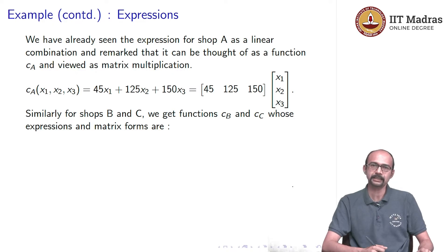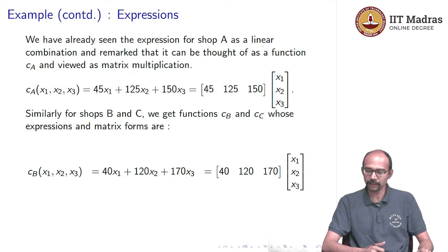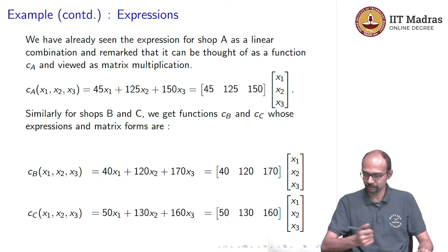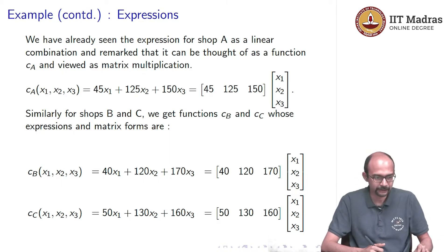Similarly for shops B and C, we can write the cost functions CB and CC. The shop is capital C and the cost is little c. And the expressions and matrix forms are as below. CB is the linear combination 40x1 + 120x2 + 170x3 and that is the corresponding matrix multiplication. And for shop C, we have the function CC which is 50x1 + 130x2 + 160x3 and the corresponding matrix multiplication.